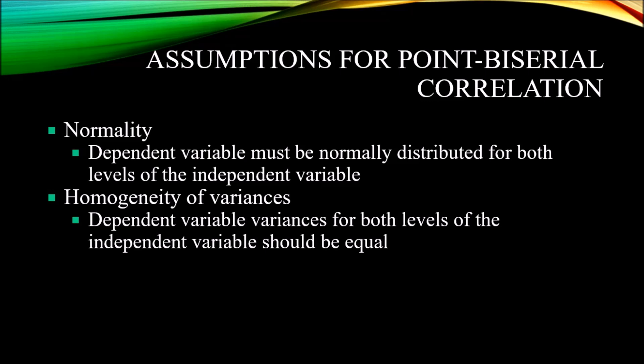The second assumption is homogeneity of variances, meaning the dependent variable variances for both levels of the independent variable should be equal. The scores for the completed group and the scores for the not-completed group should have equal variances. This is usually tested with Levene's test, which produces a probability value. If that probability value is less than 0.05, the assumption of homogeneity of variances has been violated; if greater than 0.05, the assumption has been met. I hope you found this introduction to the point-biserial correlation helpful. Thanks for watching.